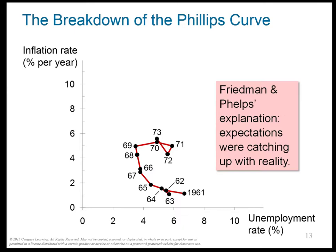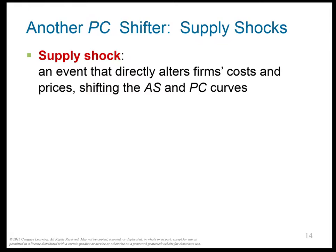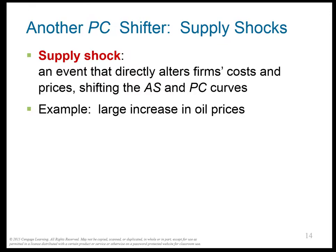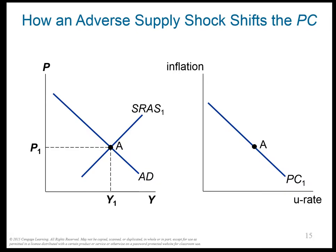You can see from 1969 through 1973, expectations were catching up with reality and we were getting into this difficult area. Then in 1973, something else happened: a supply shock — something that changed the aggregate supply curve. When something changes the aggregate supply curve, it also changes the Phillips curve. In 1973, we had a large increase in oil prices — the oil embargo.